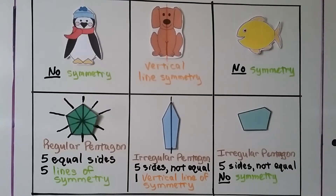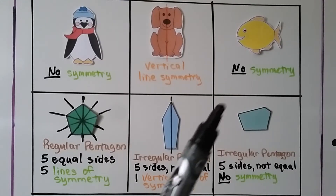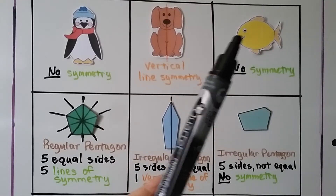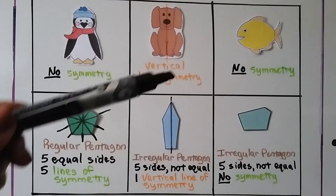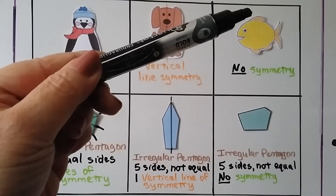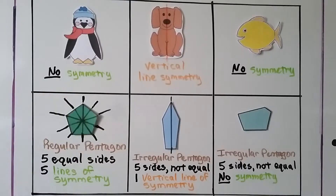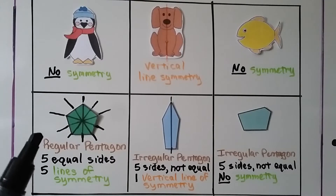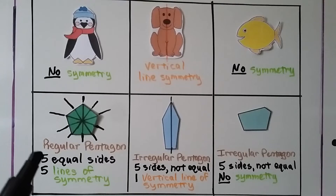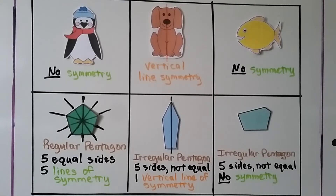This fish has no symmetry. If we drew a vertical line and folded it, the face wouldn't match the tail. If we drew a horizontal line and tried folding it, the one big fin on top would not match the two little fins on the bottom. Here we have a regular pentagon — it's a regular polygon with sides that are all the same length. Because a pentagon has five equal sides, it's got five lines of symmetry.